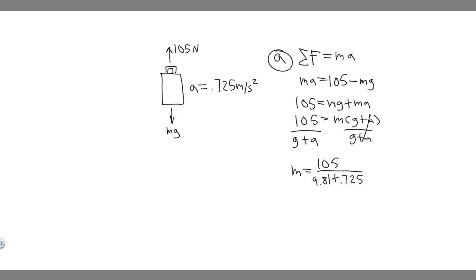And so now you can just solve. So 105 divided by 9.81 plus 0.725. And so if you go ahead and do this, what you're going to get is that the mass is equal to 9.966, and then we measure mass in kilograms. So 9.966 kilograms, that's going to be your answer to A.